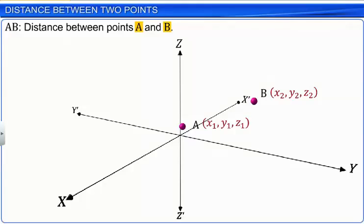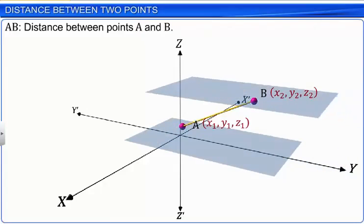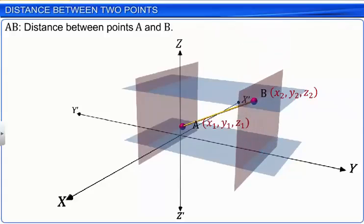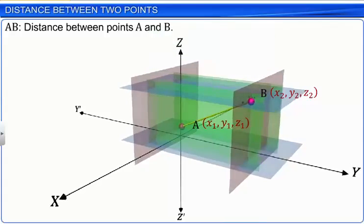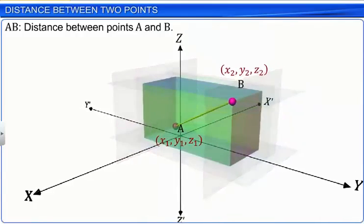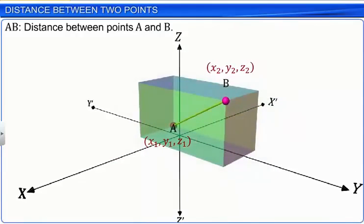Now, let us consider the planes passing through points A and B and parallel to the coordinate planes. We get a rectangular parallelepiped from the intersecting planes.